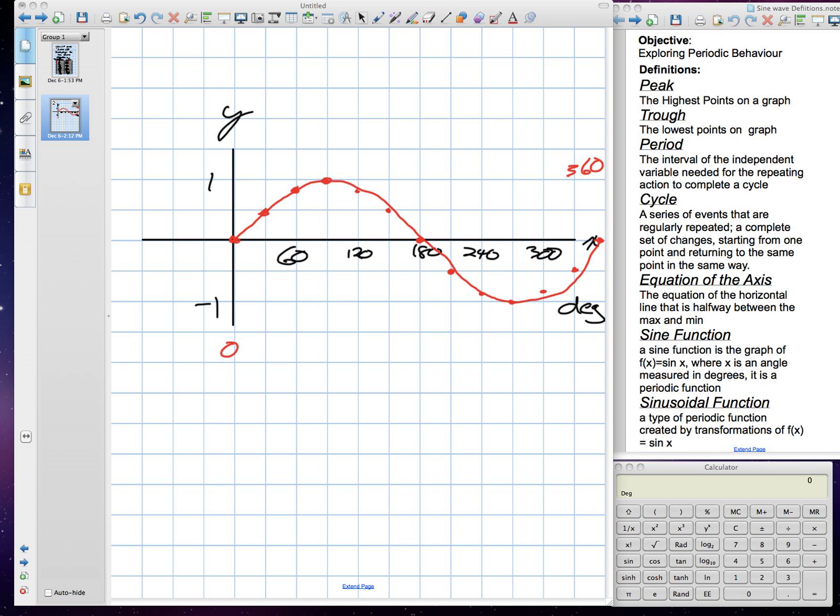So, this would be the periodic, the period of this function. It ranges from 0 to 360 degrees. It has a peak of 1, trough of negative 1. And it continues on this way.